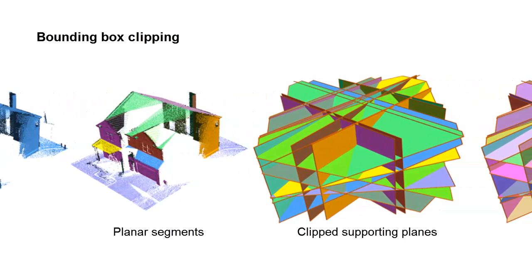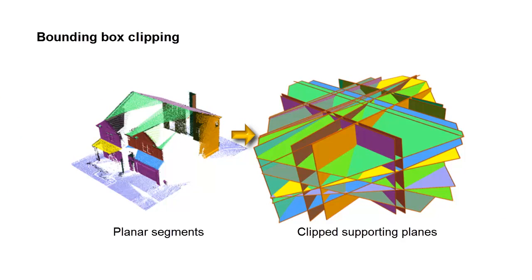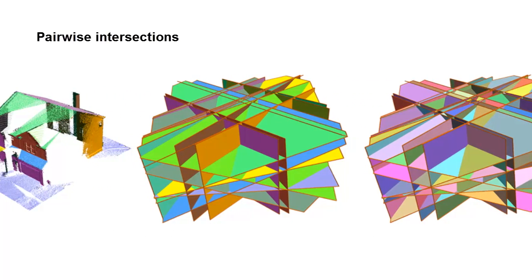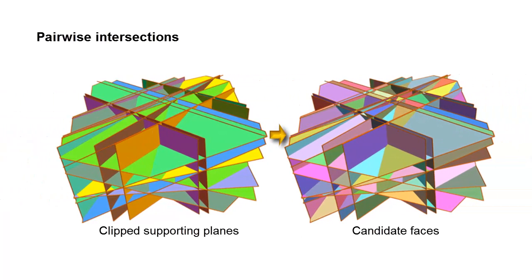We clip the supporting planes of these planar segments by an enlarged bounding box of the point cloud. Then we compute pairwise intersections of the clipped planes to obtain a set of candidate faces. Here the candidate faces are randomly colored.